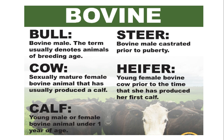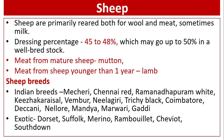Bovine terminology: bull means bovine male — the term usually denotes animals of breeding age. Steer means bovine male castrated prior to puberty. Cow means a sexually mature female bovine animal that has usually produced a calf. Heifer means a young female bovine cow prior to the time she has produced her first calf. Calf means a young male or female bovine animal under one year of age.